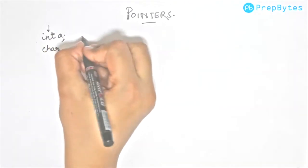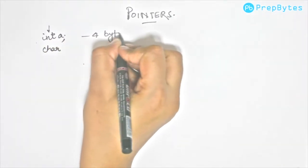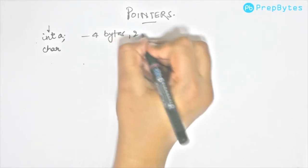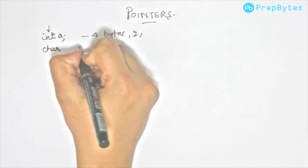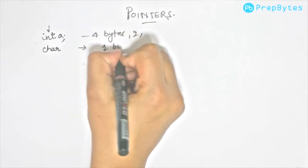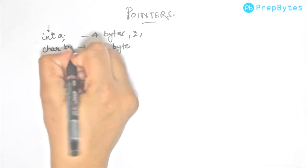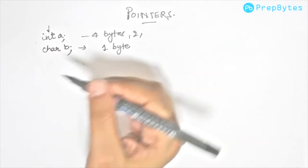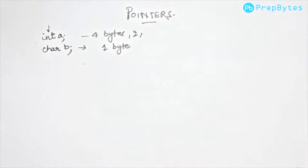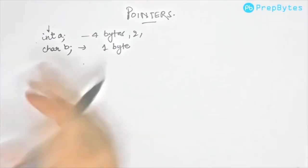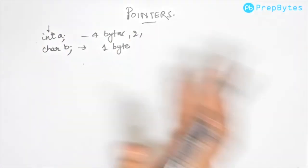In case it is integer, it will have 4 bytes or 2 bytes or 8 bytes depending upon the memory size. In case it is character, it will be 1 byte. Say we have char b. Every variable that we have in our code consumes some amount of memory. Let's see how it is represented in memory.